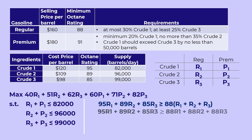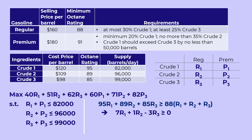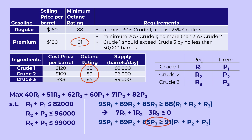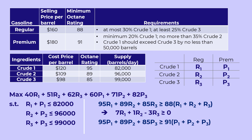Rewriting so that there are no variables on the right-hand side gives 7R1 plus R2 minus 3R3 greater than or equal to 0. For premium, the octane rating should be minimum 91. The coefficients on the left are the octane ratings for the crudes. Minimum 91 means at least 91, or greater than or equal to 91 times the total amount of premium. That can also be rewritten as 4P1 minus 2P2 minus 6P3 greater than or equal to 0.